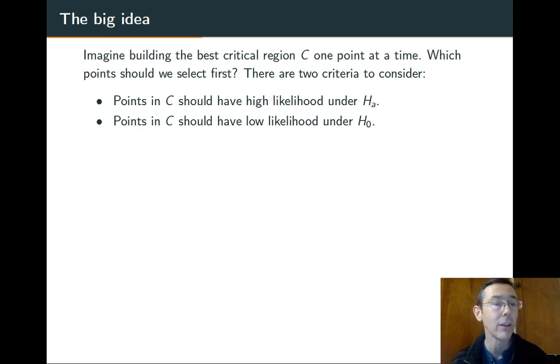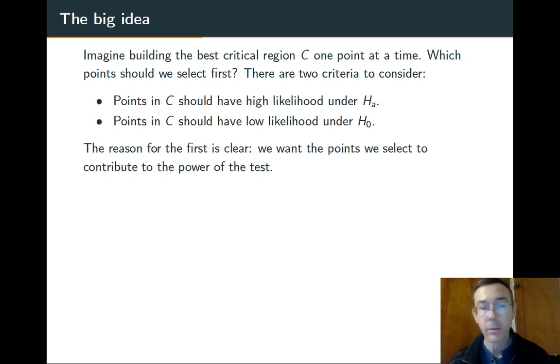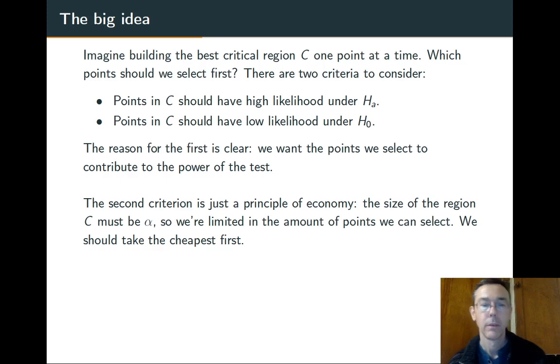First of all, we'd like to add points that have high likelihood under H_A. The whole point is that when H_A is true, the probability of randomly selecting points in C should be high. Secondly, points in C should have low likelihood under H_0. So I already mentioned why the reason for the first is clear. What about the second?